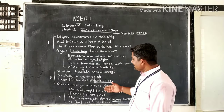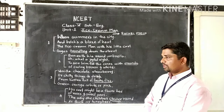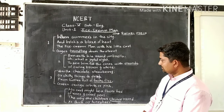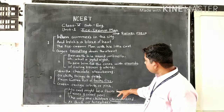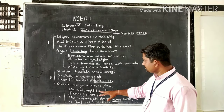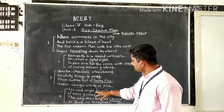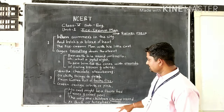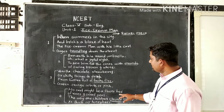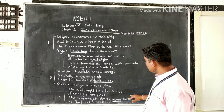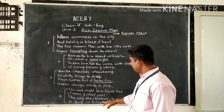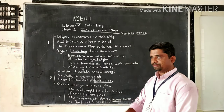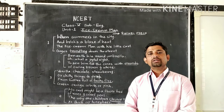In the last stanza, the poet says: 'His cart might be a flower bed of roses and sweet leaves, the way the children cluster round as thick as honeybees.'